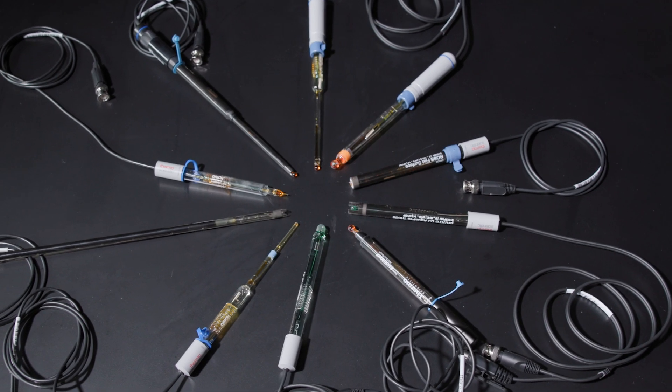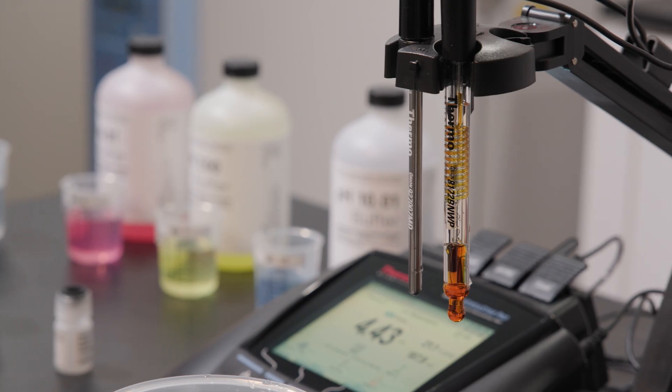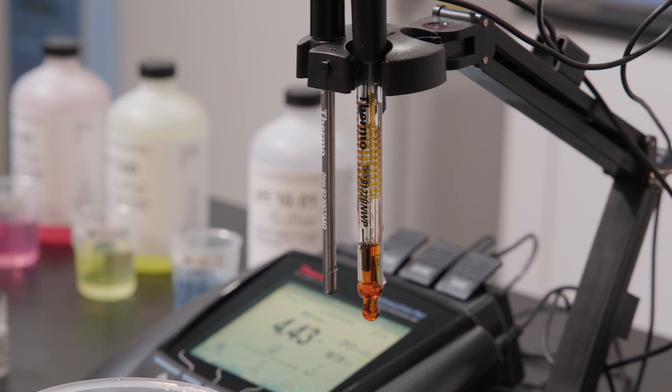The key to accurate pH analysis is using the correct electrode. Because there are so many options, it's often hard to know which pH electrode is right for your application. You may have an electrode type that you've used for years, but is that the best choice for your sample?